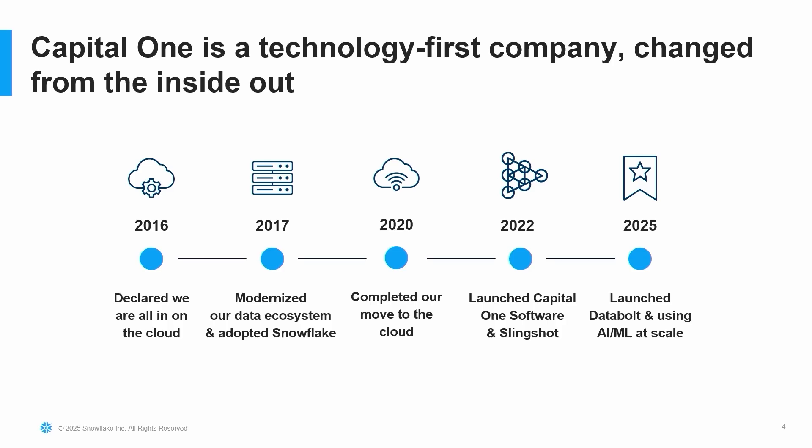We built Slingshot in-house as a data management capability, and now we've opened it for other businesses to leverage their cloud investments, like Snowflake. This past April, we launched Databolt, which is a tokenization solution at scale. This is now offered outside Capital One as a SaaS offering — it allows you to tokenize and secure your data at scale.